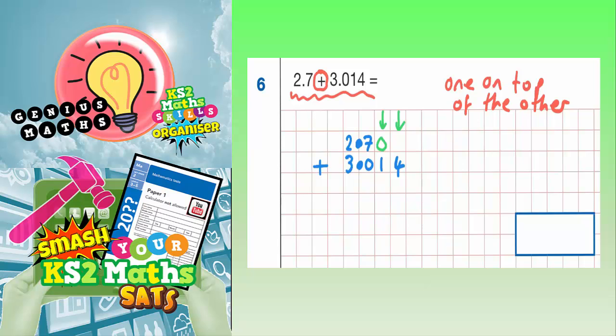And 2.70 with an extra zero on the end is also the same as just 2.7. So we're not actually changing the value of 2.7 by adding in those extra zeros. We're just filling in the gap. And now we're ready to work it out.